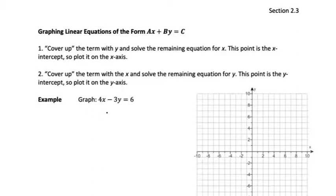First you're going to cover up the term with the y, so the whole thing. So I'm going to cover up negative 3y and then you solve the remaining equation for x. So my remaining equation is 4x equals 6. And then to get x by itself, divide both sides by 4, and that gives me x equals 1.5. This is the x-intercept, so I plot it on the x-axis, so it'll be about right there, between 1 and 2.